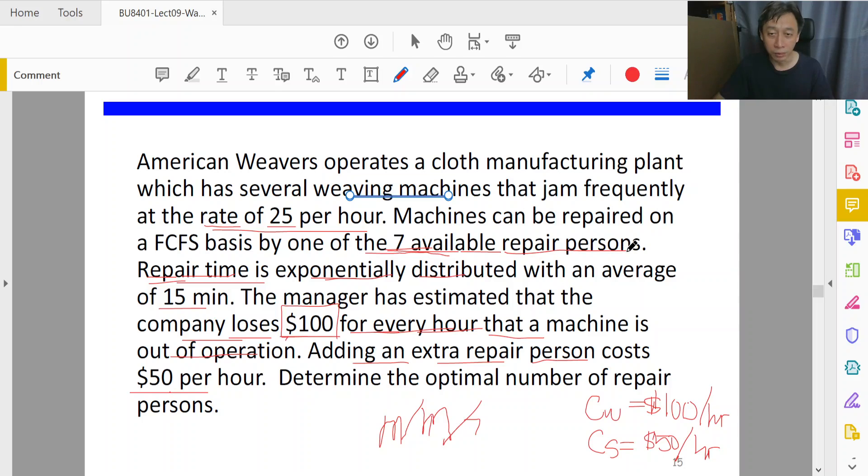Seven available repair persons - machines can be repaired on a first come first serve basis. The number of repair persons is seven, so we know that the number of servers k equals seven. Cs refers to payment to the servers to maintain service operations, so that's $50 per hour. Determine the best number of repair persons.